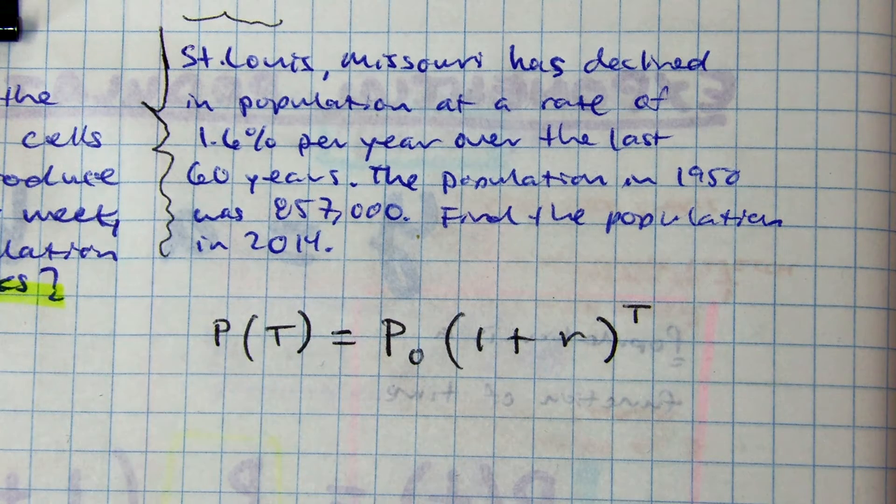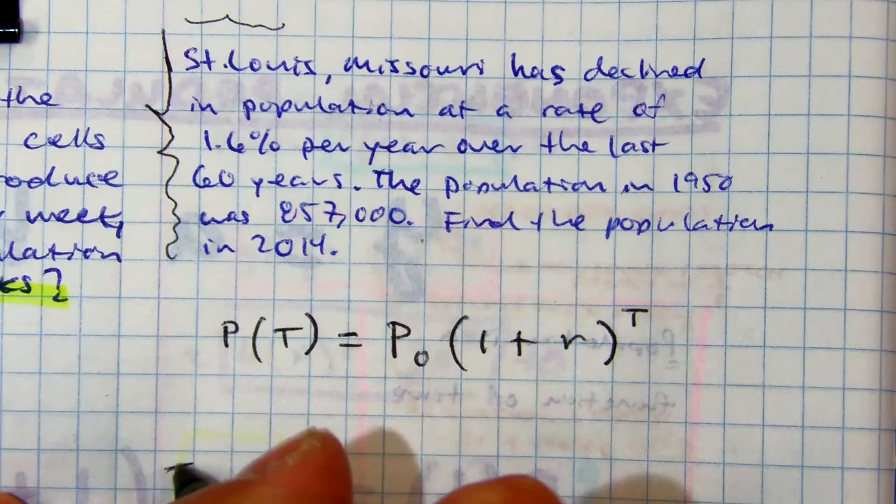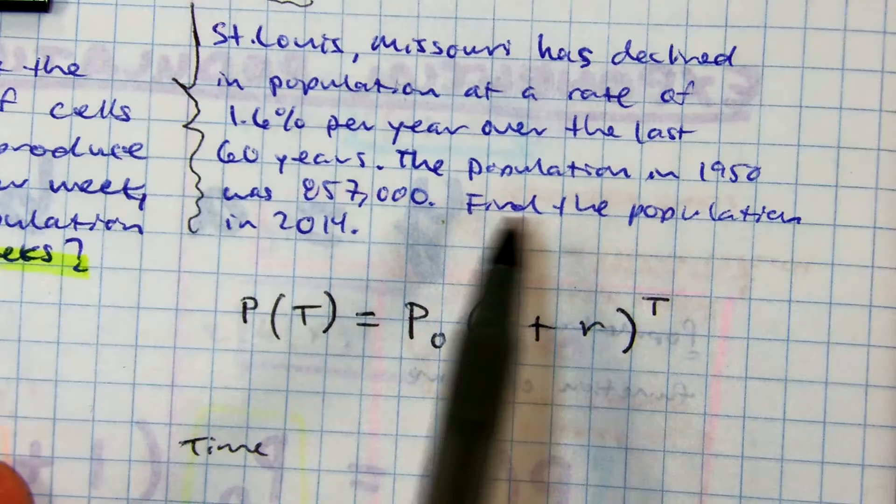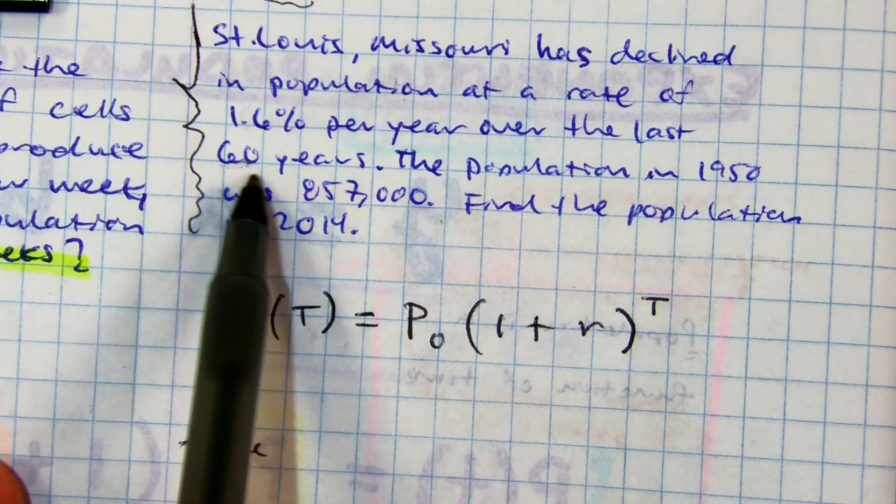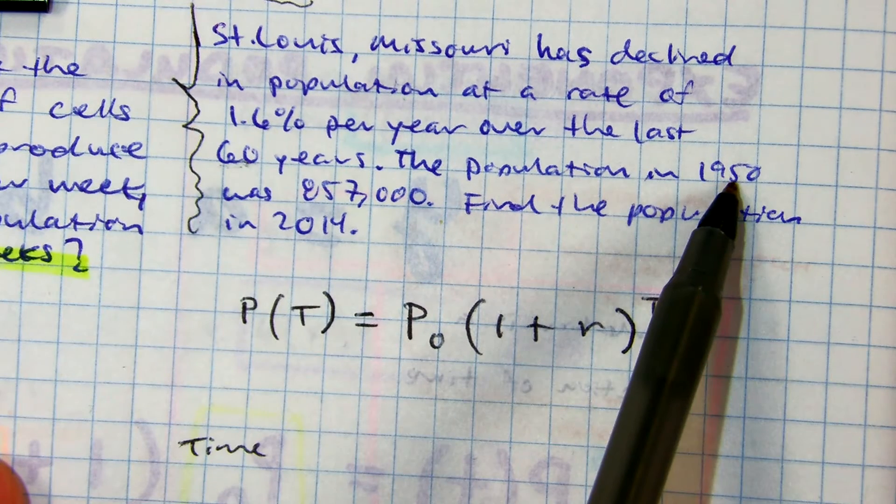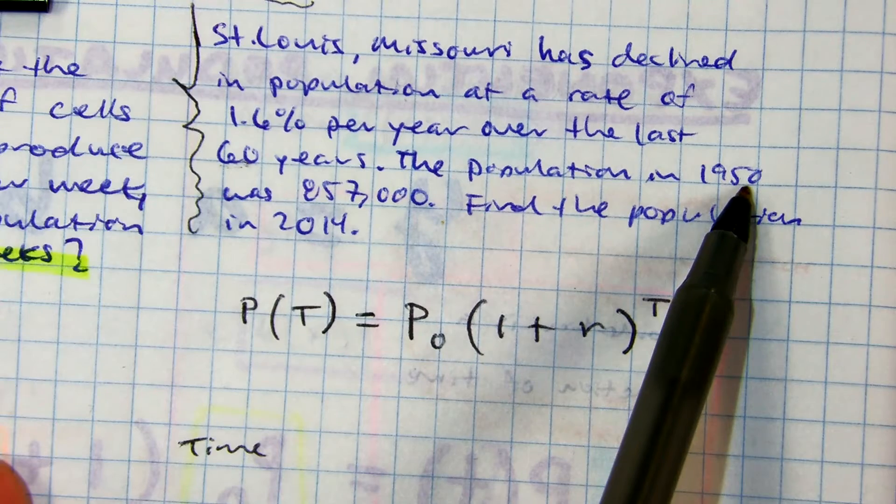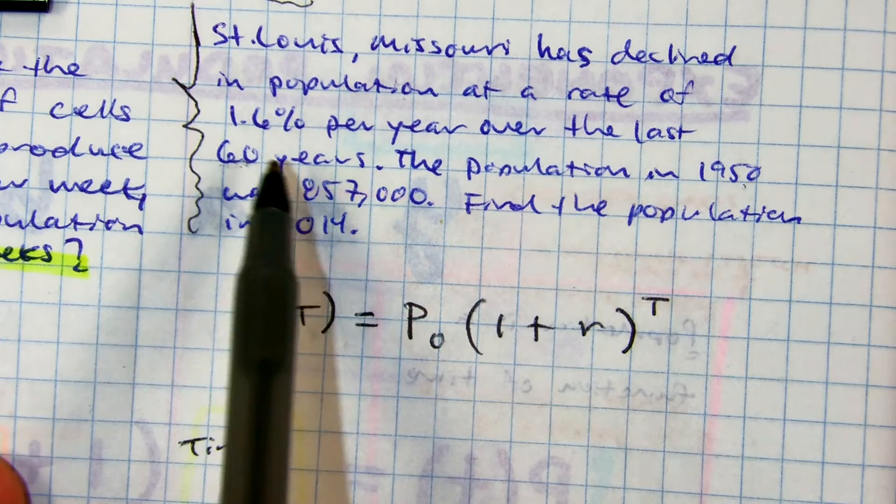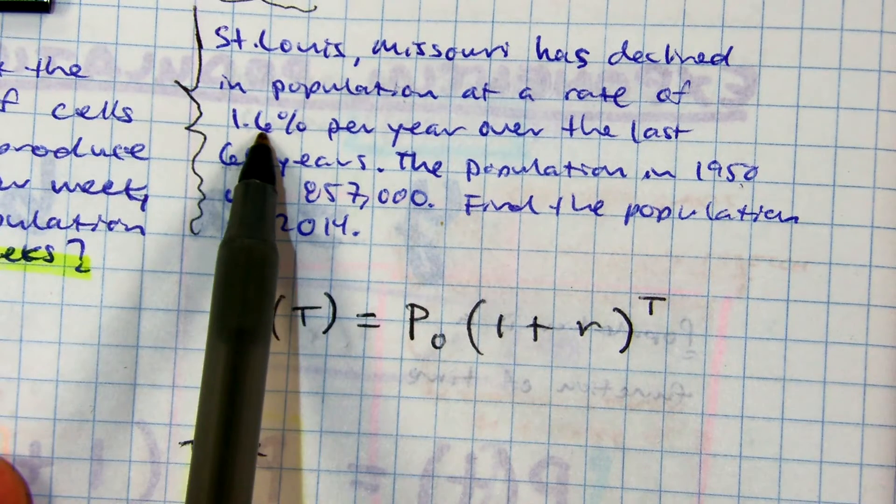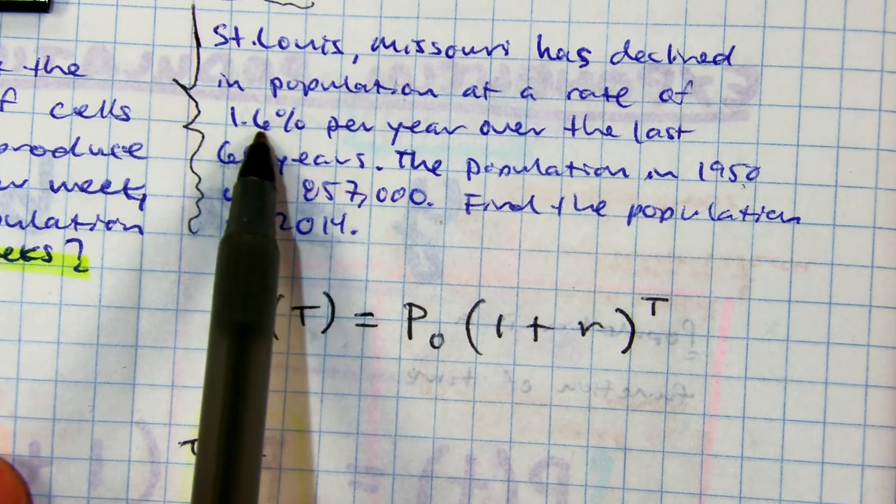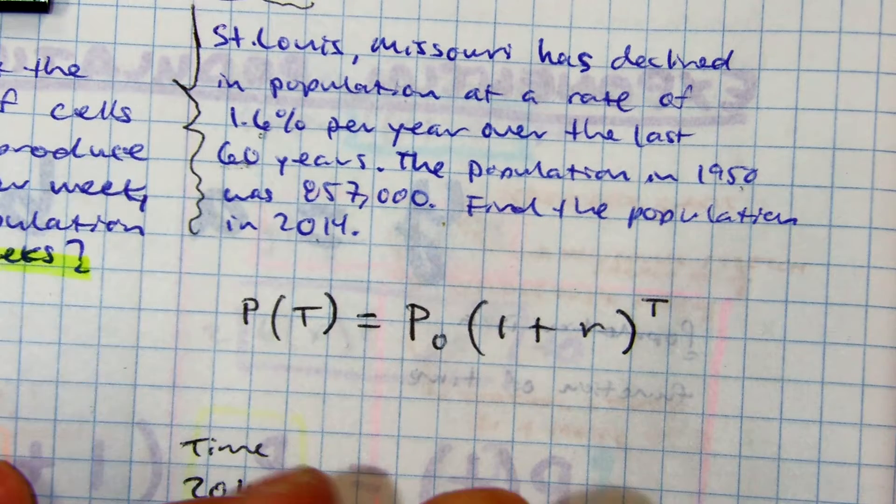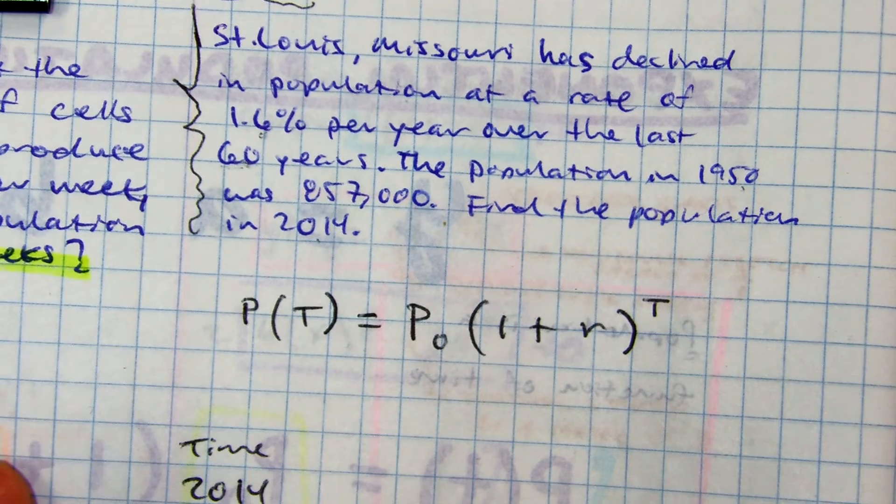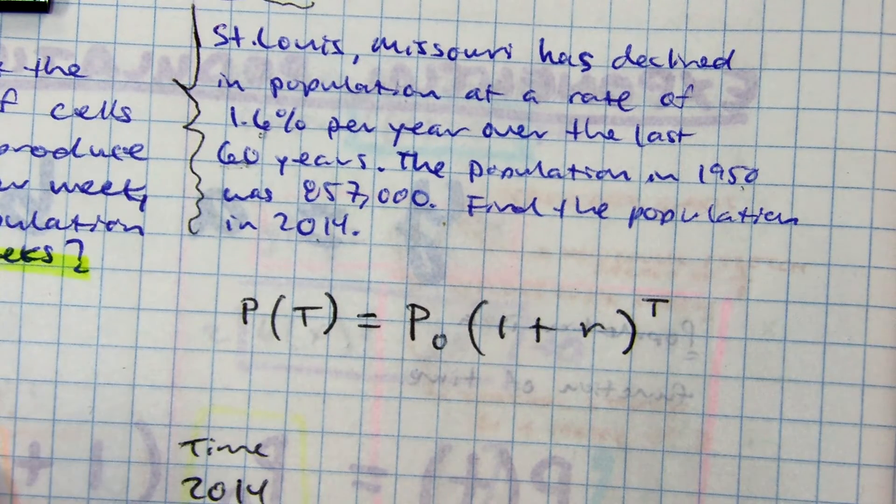So, for the time, although they took data from the past 60 years, they looked at 60 years basically from 1950 to 2010, they got a decline of 1.6%. They're asking you to use the data to figure out for 2014. And that gives us T equals 64.